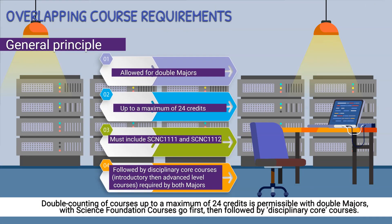Double counting of courses up to a maximum of 24 credits is permissible with double majors, with science foundation courses counted first, then followed by disciplinary core courses.